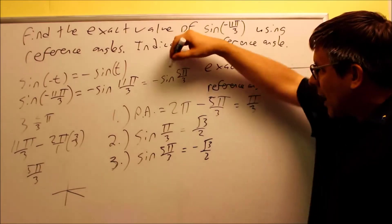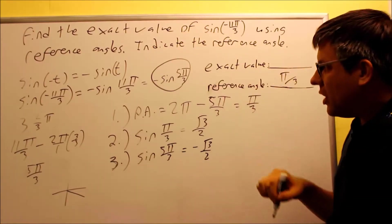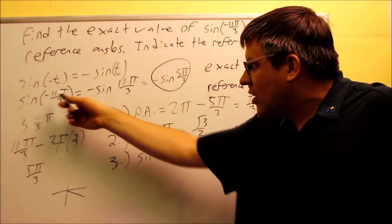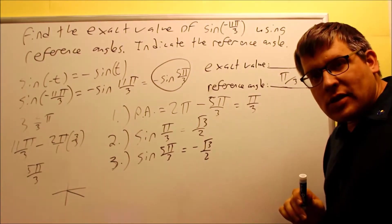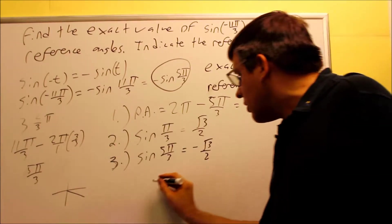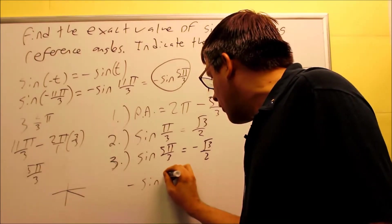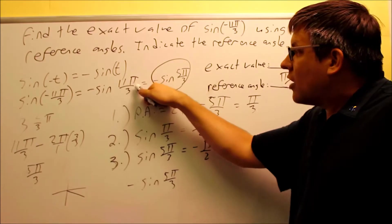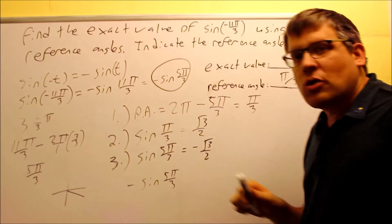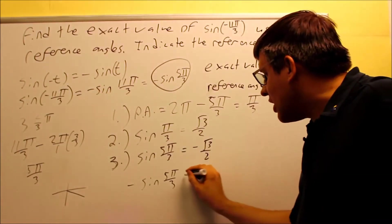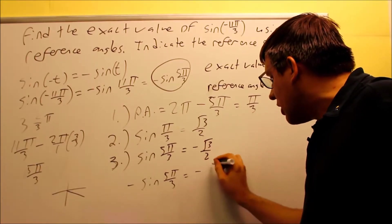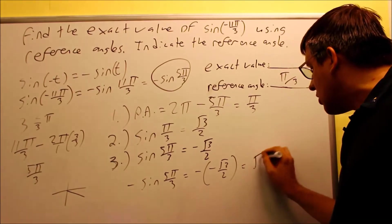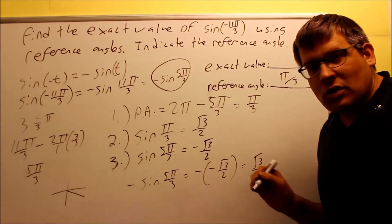But my original problem was this one here. I had a negative sign originally in my answer because it was a negative angle, I changed it into a positive angle. So if I want to do negative sine 5π over 3, which is the same as negative sine 11π over 3, which is the same as the original problem that we started with, that means I need to apply a negative to this. So I really have negative times negative root 3 over 2, so my answer is actually going to be positive in this case.